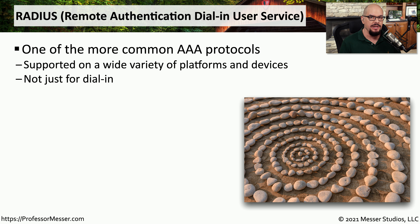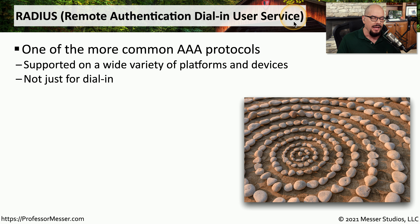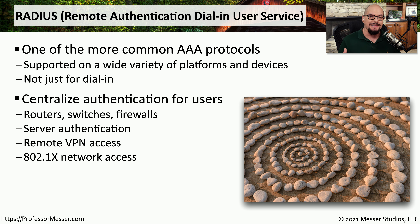There are many different authentication services that you might have running on a centralized authentication server. One common type is RADIUS authentication, which stands for Remote Authentication Dial-In User Service. Although it has 'dial-in' in the name, these days we commonly use RADIUS over Ethernet networks. It provides a centralized database of usernames and passwords, which you can use to authenticate for your routers and switches.